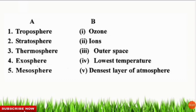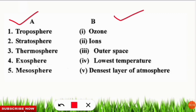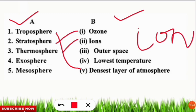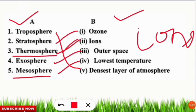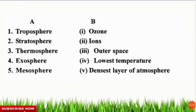The next question is a match-the-following: correctly match the layers of atmosphere with their functions. Troposphere is the densest layer. Stratosphere contains the ozone layer. Thermosphere contains ions — because UV radiation causes photo-ionization and photo-dissociation of molecules, producing ions, so thermosphere constitutes the larger part of the ionosphere. Exosphere is the outer space of the atmosphere. Mesosphere has the lowest temperature, while thermosphere has the highest temperature among atmospheric layers.